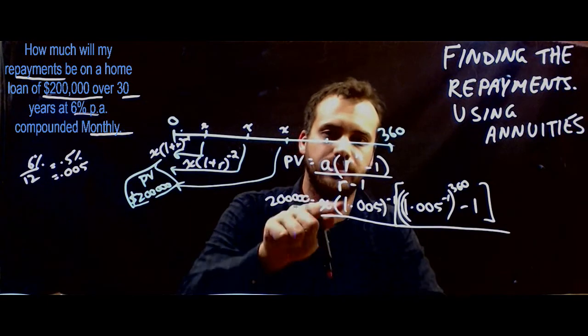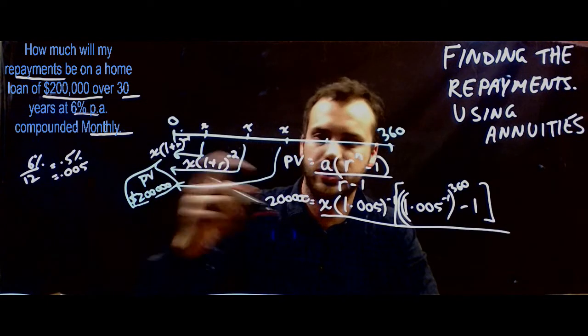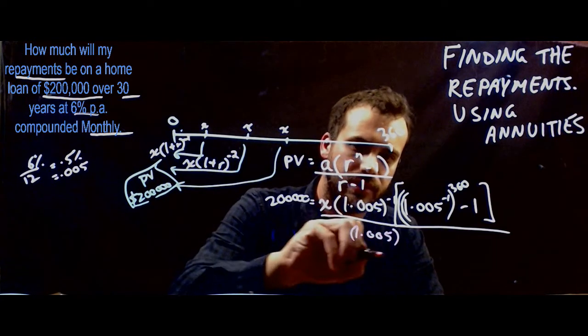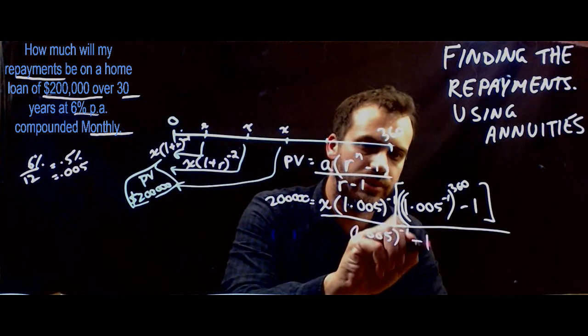And then all of that divided by R. Now remember that R is the common ratio, which is 1.005 to the negative 1. That's the common ratio minus 1.